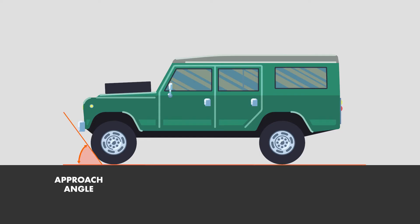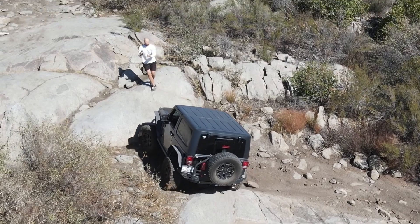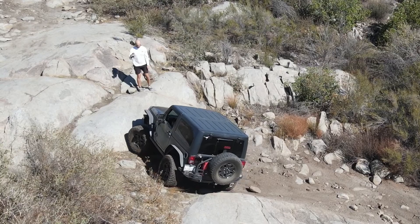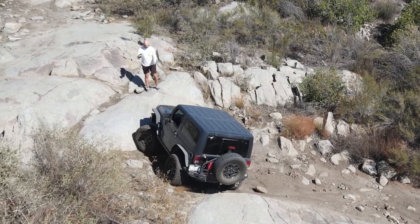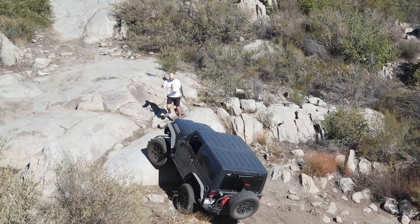Let's start with the approach angle because this is the one you'll most likely have to consider when you're first approaching an obstacle. The approach angle is the steepest angle a hill or obstacle can have so that the front wheels of your vehicle can rise up onto that obstacle without your bumper hitting the obstacle.